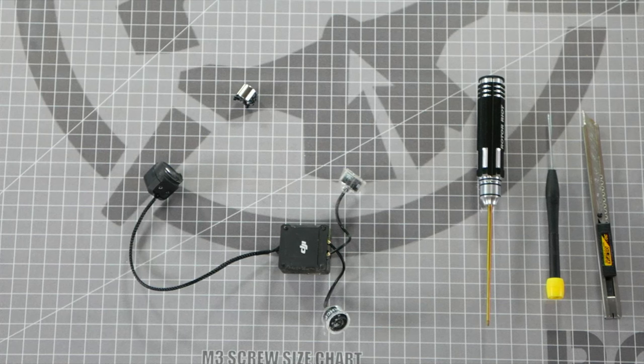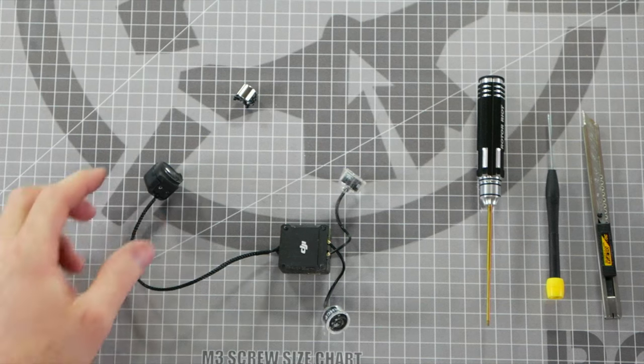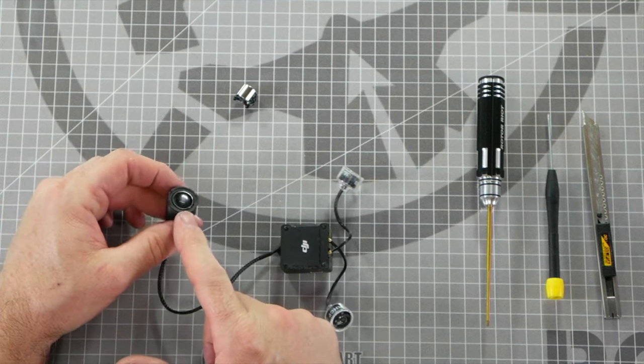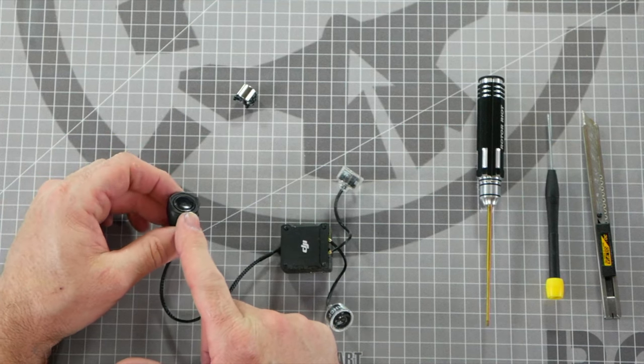What's up everybody? Welcome to Rotorite Workbench. I'm Let's Flyer C and I'm going to show you how to fix your scratched or dinged FPV camera lens on your DJI O3 FPV system.